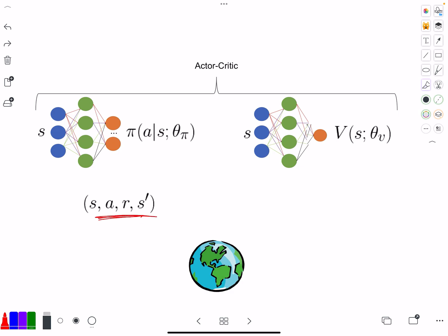With this experience tuple, you can use it for calculating, for estimating a bootstrap return, right? So you have the reward plus the discounted value of the next state.